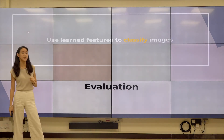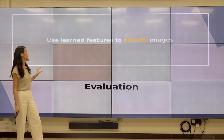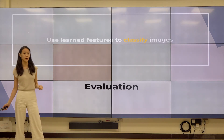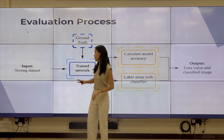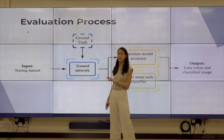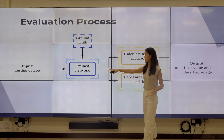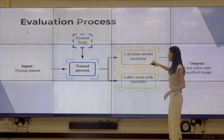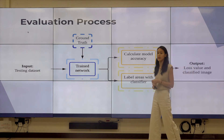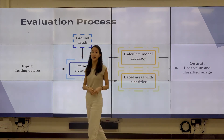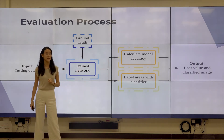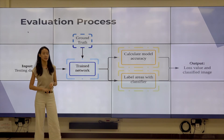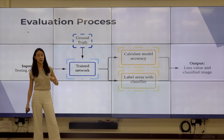Evaluation is very similar to inference in segmentation. We use trained features in the trained model to classify images from datasets the model has never seen. The process: start with the testing dataset — which has never seen this model — along with the ground truth, run them through the trained network, evaluate accuracy by calculating how well the model classified the image, and label areas with the classifier. The outputs are the loss value (how accurate the classification model was) and the classified image — benign, malignant, etc.